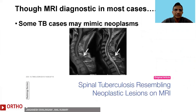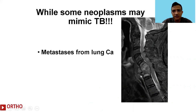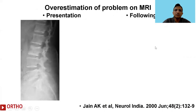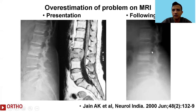There is a word of caution regarding MRI: though it is diagnostic in most cases, some tuberculosis cases may mimic neoplasms, and vice versa, some neoplasms may mimic tuberculosis. Here is an example that might otherwise look like tuberculosis but is actually a metastasis from lung carcinoma. Here is an illustrative case where the x-ray looked unremarkable but the MRI looked quite severe — being aware of MRI overestimation, the patient was given conservative treatment with a satisfactory outcome.